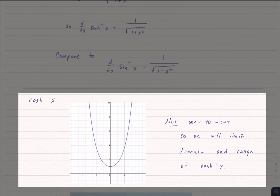Now, hyperbolic cosine is not, in fact, one-to-one. So we're going to have to limit the domain and range of what we use for the hyperbolic cosine, just like we did with sine and cosine, to find its inverse. You can only have an inverse function if the function is one-to-one.